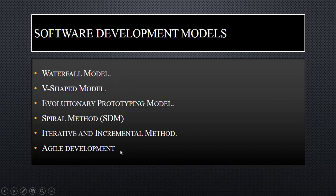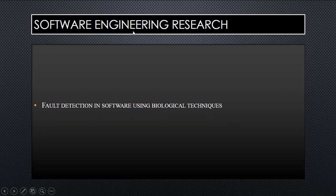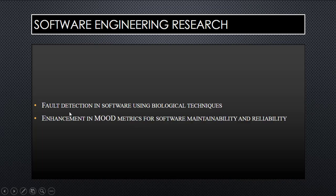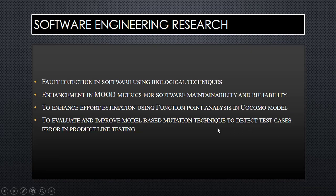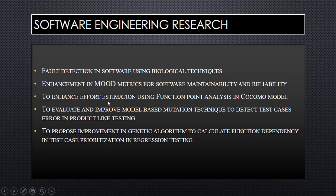The different models used in software engineering include the waterfall model, V-model, spiral model, and COCOMO model. Current software engineering research focuses on fault detection in software, enhancement in mood matrix for software maintainability and reliability, and enhancing effort estimation using function point analysis in the COCOMO model. These are the types of research work happening in this field.